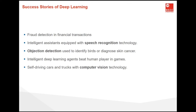By 2017, this error rate was down to 2.25%. Similarly, stunning results have been achieved for identifying birds or diagnosing skin cancer. Games used to be a symbol of human intelligence. AlphaGo reached human parity in 2015 using deep learning combined with Monte Carlo tree sampling, illustrating the impressive progress in games and the crucial role advanced algorithms play in them.